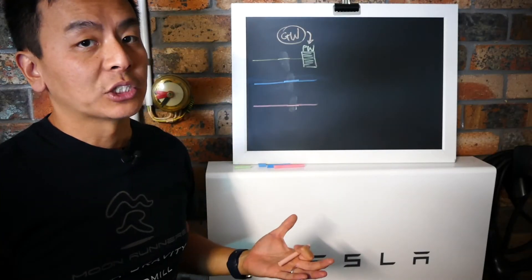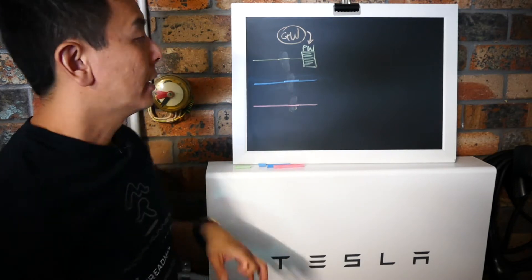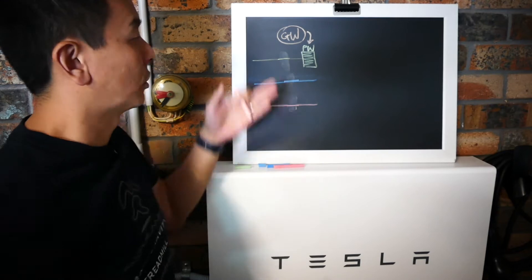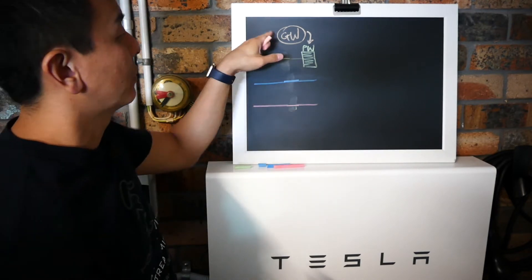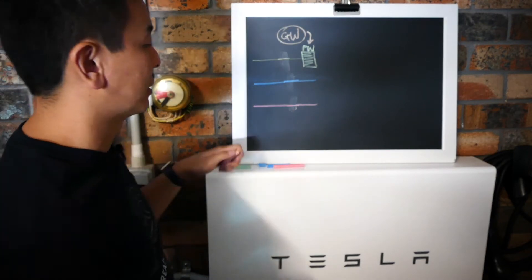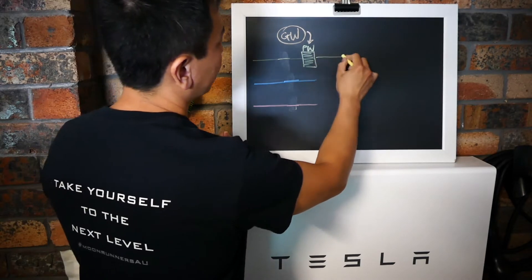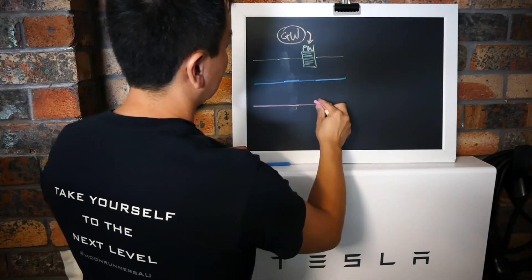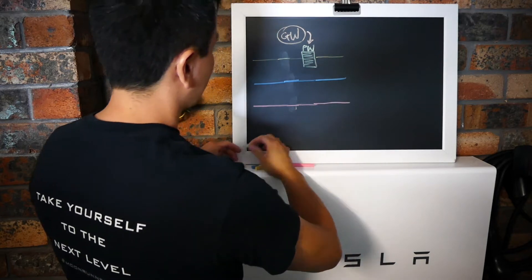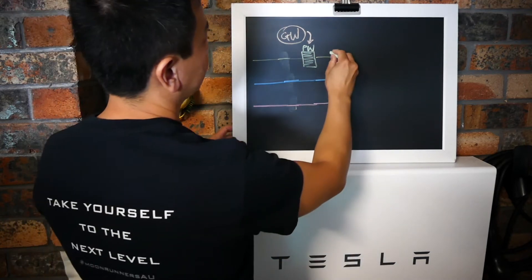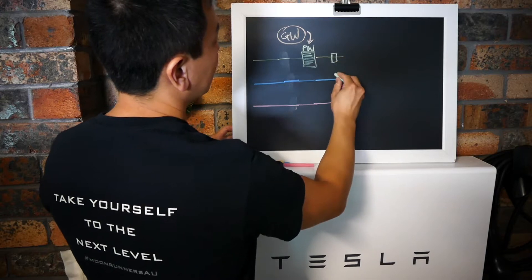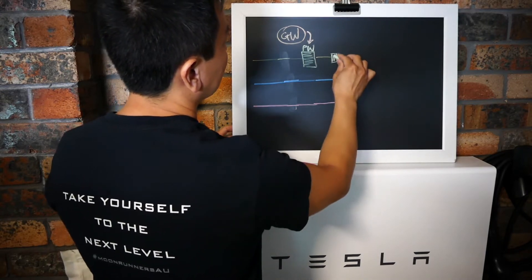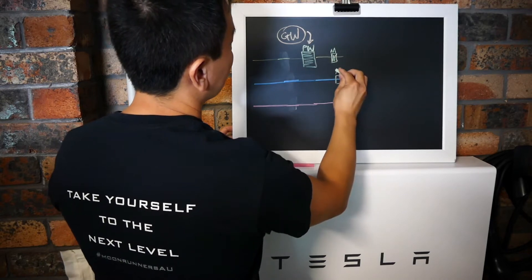Okay so the Gateway communicates to the Powerwall 2, tells it to discharge when not to discharge. Now when the electrician comes to your house to install the Powerwall 2 they will put something called CT clamps or simply put meters across all three phases so that the Gateway knows how much is being used at this time. So I'm just going to extend my three phases across here to make it a bit easier.